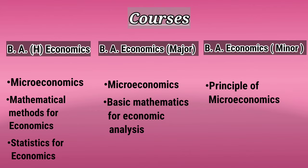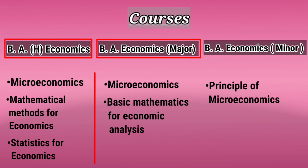So with this we can understand that in Economics Honours, in almost all the semesters, along with Economics you'll be having Maths as well as Stats. Whereas in BA Economics Major you'll be having Economics along with Basic Maths. And in BA Economics Minor you just have to study Economics — no Maths or Stats will be included. So this was the overview of the course.